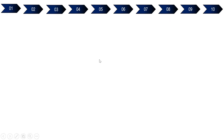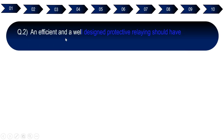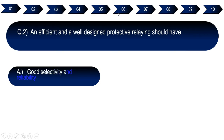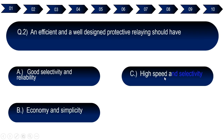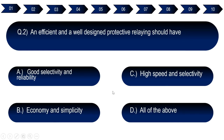Question number two: An efficient and well-designed protective relay should have. Option A: good sensitivity and reliability. Option B: economics and simplicity. Option C: high speed and selectivity. Option D: all of the above. The right answer for question number two is option D — all of the above, meaning good sensitivity and reliability, economics and simplicity, and high speed and selectivity.